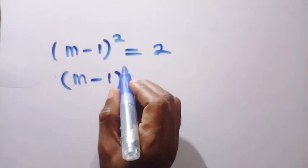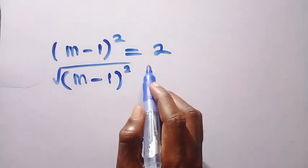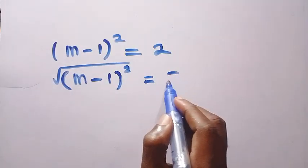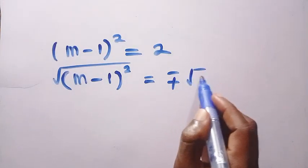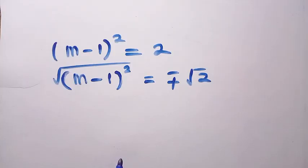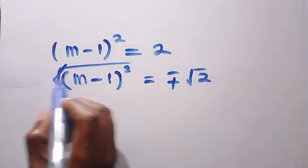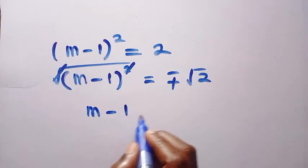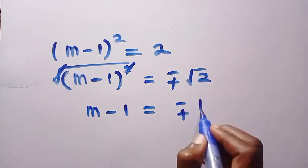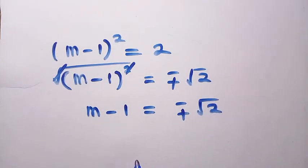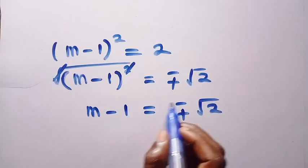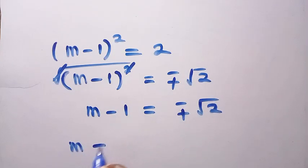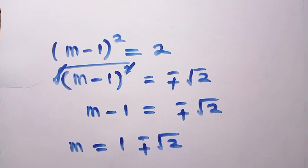Taking the square root of both sides: m - 1 = ±√2. Since the square and square root cancel each other, we have m - 1 = ±√2. Taking -1 to the other side, m = 1 ± √2. So here is the value of m for this question.